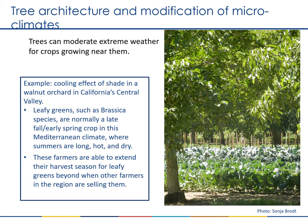In terms of having a larger, more complex architectural structure, trees can play a major role in creating more moderate microclimates for crops growing under or near them. This photo shows an old walnut orchard in the northern central valley of California. The valley has a Mediterranean-type climate and gets quite hot and dry during summer months, typically not a good place to grow brassica species and other leafy greens in summer. However, the farmers find that they can extend their harvest season into the early summer months because the walnut trees start to leaf out and provide shade, giving them an advantage in the local farmer's market.